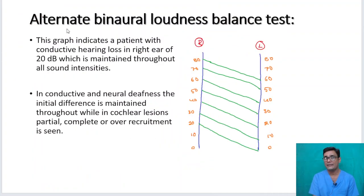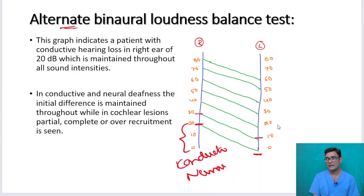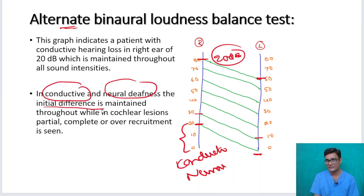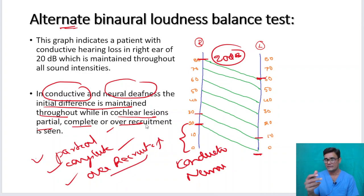Comparing this to conductive hearing loss: in conductive or neural hearing loss, a 20 dB difference established at the start is maintained throughout — even at 60 dB you still need to raise it by 20 dB. That initial difference is maintained throughout. While in cochlear lesions, you will see partial, complete, or over-recruitment. The more the recruitment, the more difficulty in giving the patient a hearing aid.